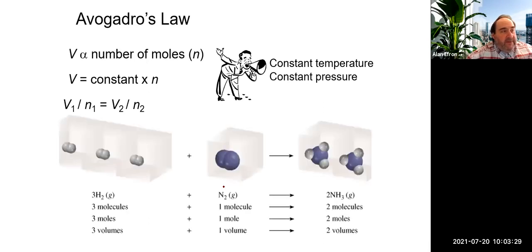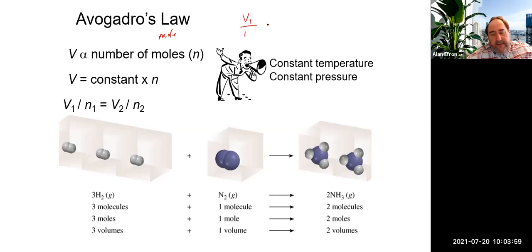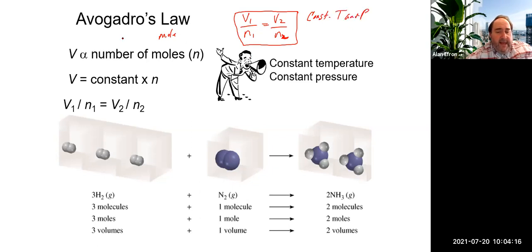Avogadro's number: one mole of something equals 6.022 times 10^23. Avogadro's Law deals with the relationship between moles and volume at constant temperature and pressure. His relationship is V1 over N1 equals V2 over N2, where N is the number of moles and V is volume. Volume and moles of gas are directly proportional to each other.